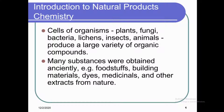Natural product chemistry is the chemistry that deals with naturally occurring substances — naturally occurring chemicals that are present in a wide variety of organisms ranging from bacteria to human beings. Every living entity contains chemicals, and natural product chemistry deals with those chemicals. It helps us understand what sort of compounds or molecules are present inside small organisms, animals, birds, plants, human beings, sea organisms, and so forth. Cells of organisms — plants, fungi, bacteria, lichens, insects, animals — produce a large variety of organic compounds.